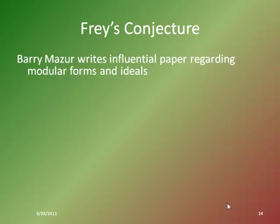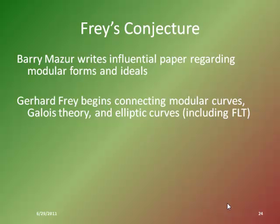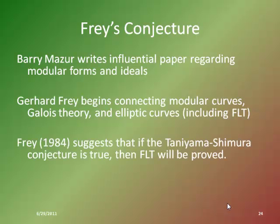Barry Mazur comes along — now we're in the late 1980s — and he writes an influential paper regarding modular forms and ideals. The way he ties these topics together sparks the interest of Gerhard Frey. Frey starts connecting modular curves, Galois theory, Galois groups, and elliptic curves, and then suggests that if Taniyama and Shimura were right — that their connection of elliptic curves and modular forms is correct — then Fermat's Last Theorem would be proved.